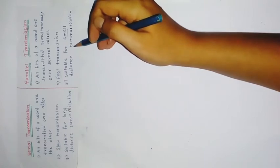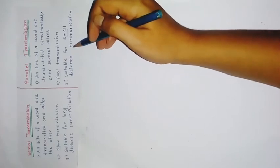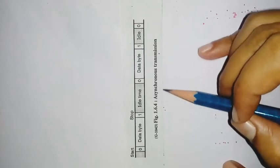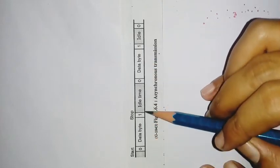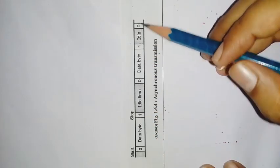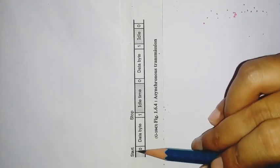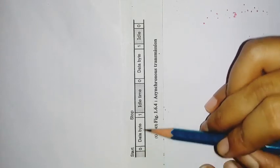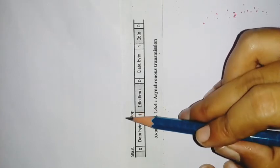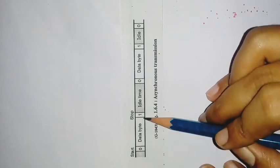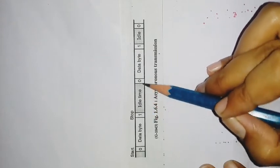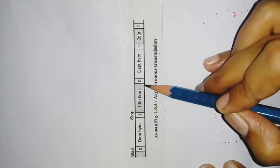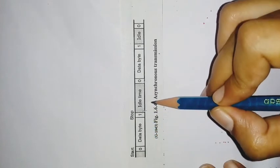Now let's see the diagram of asynchronous transmission and synchronous transmission. In asynchronous transmission, we have data bytes sent from transmitter to receiver. In that data, there is a zero which is indicated as a start bit and a one which is indicated as a stop bit. Data bytes are sent one after another, and in between there is a time interval, and this time interval is not fixed — it is variable.